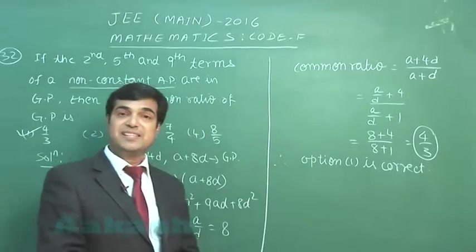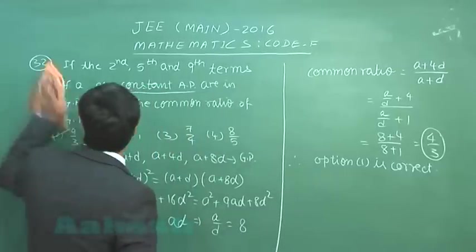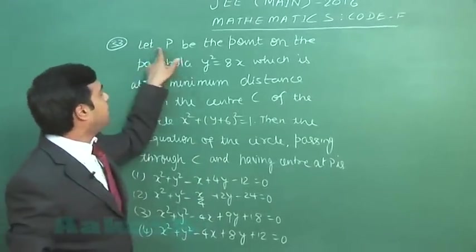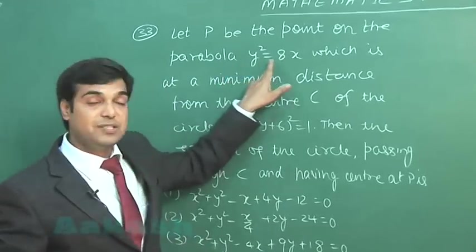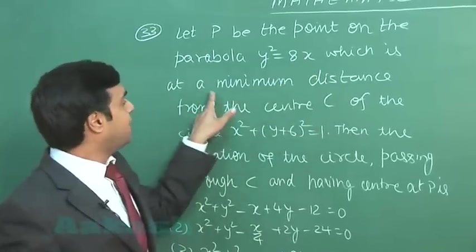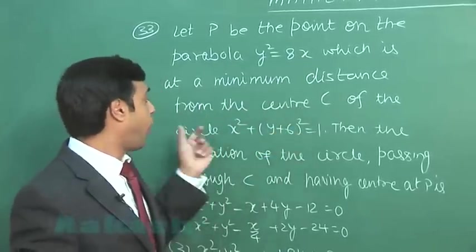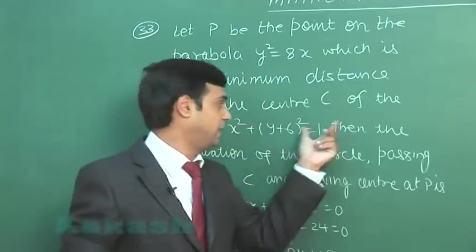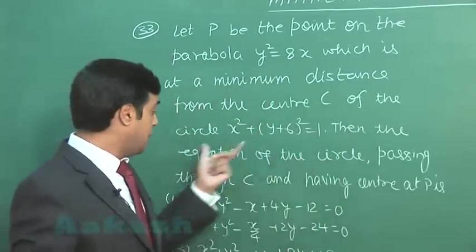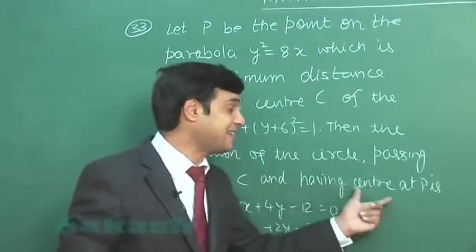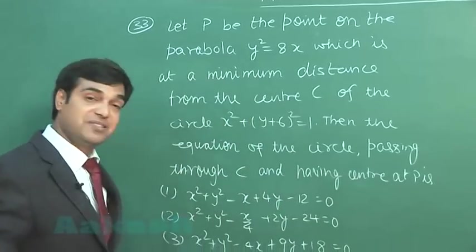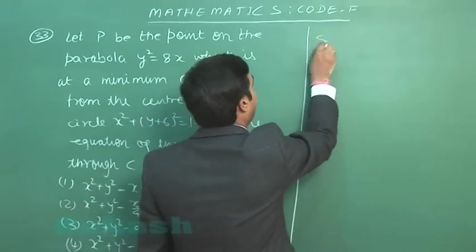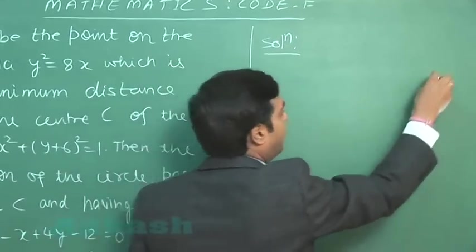Okay, let us move to the next one, that is question number 33. Let P be the point on the parabola y squared equals 8x which is at a minimum distance from the center C of the circle x squared plus (y plus 6) whole squared equals 1. Then the equation of the circle passing through C and having center at P is? Four options are given. So this one from geometry, let us try first make some rough sketch.